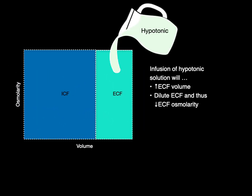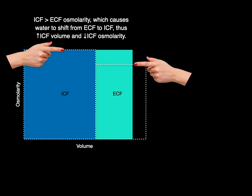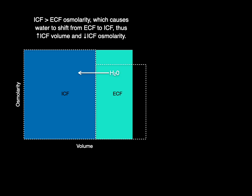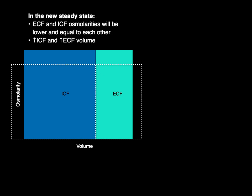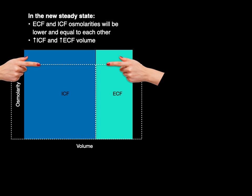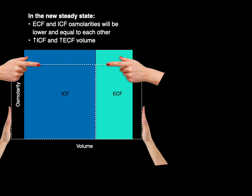An infusion of hypotonic solution will increase extracellular fluid volume, but we dilute the extracellular fluid and thus decrease extracellular fluid osmolarity. Now the intracellular fluid osmolarity is greater than extracellular fluid osmolarity, which causes water to shift from the extracellular fluid to the intracellular fluid until their osmolarities equal. As a result, in the new steady state, extra- and intracellular fluid osmolarities will be lower and equal to each other, and we have an increase of both intra- and extracellular fluid volume.